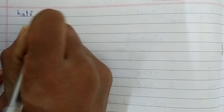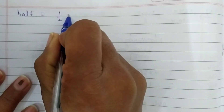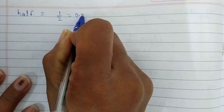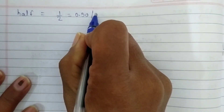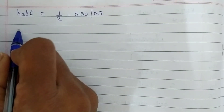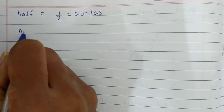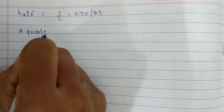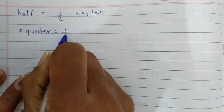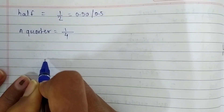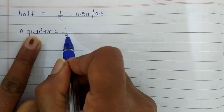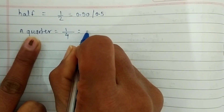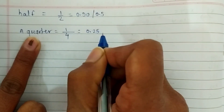Look here. Half is written as 1 upon 2 in fraction form, and in decimal form it is written as 0.50 or 0.5. Now we are going to see a quarter. Quarter means one part of the four units. A quarter is written as 1 upon 4 in fraction form and it is written as 0.25 in decimal form.